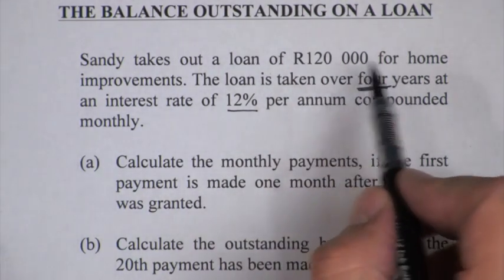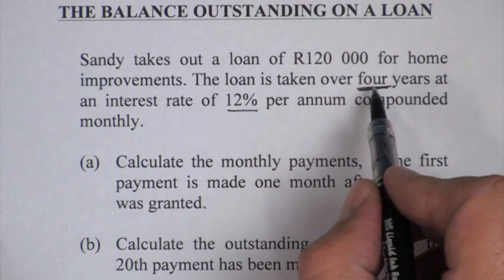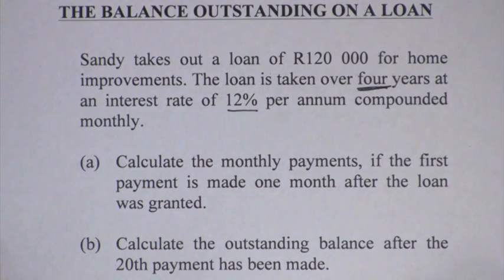So remember, 120,000, four years, 12% monthly.